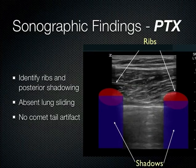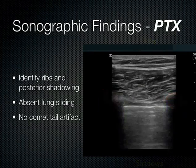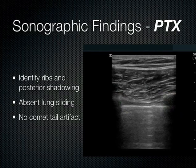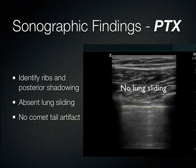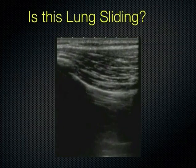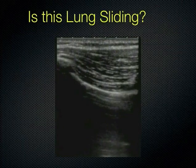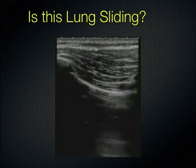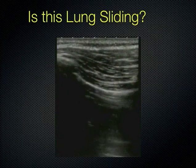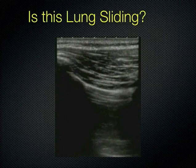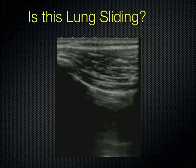Looking at another example: is this lung sliding? No — it's a pneumothorax. That's really all you need to know. Getting the image is very easy — you'll all be flying through this quickly. How difficult is it? Very easy to get the image.